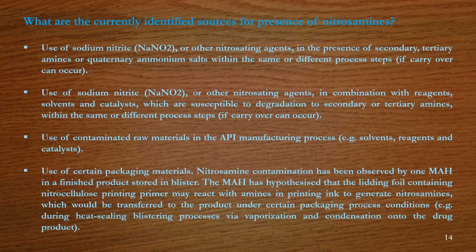What are the currently identified sources for presence of nitrosamines? First, use of sodium nitrite or other nitrosating agents in the presence of secondary, tertiary amines or quaternary ammonium salts within the same or different process steps if carryover can occur. Second, use of sodium nitrite or other nitrosating agents in combination with reagents, solvents and catalysts which are susceptible to degradation to secondary or tertiary amines within the same or different process steps if carryover can occur.